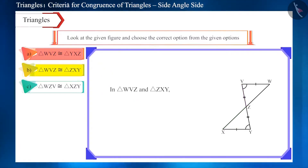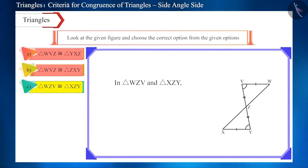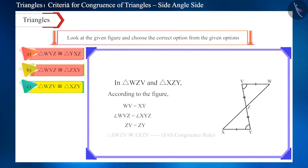Moving to the second option: according to the name of the triangles, side WV is not equal to side ZX, so this option is also incorrect. Looking at the last remaining option: side WV is equal to side XY, angle WVZ is equal to angle XYZ, and side ZV is equal to side ZY. According to the SAS congruence criterion, these triangles are congruent. So the third option is the correct option.